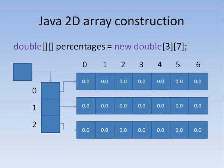This slide shows a picture of what the allocation creates. Percentages is an array with three elements. Each of those elements refers to an array of seven doubles.